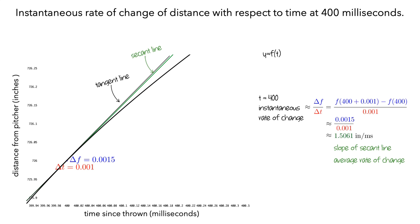The slope of this tangent line is the instantaneous velocity at exactly 400 milliseconds after the ball left the pitcher's hand. Now, let's make this whole process a little more formal, using the idea of limits.